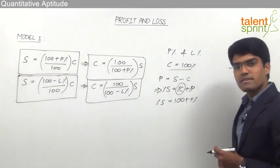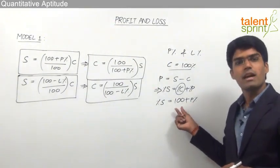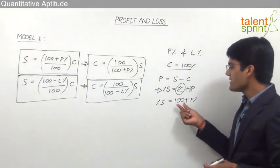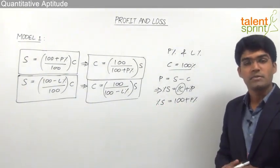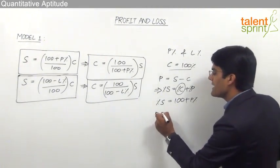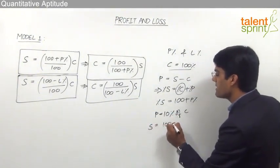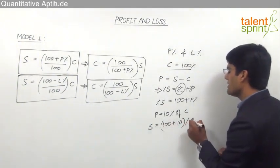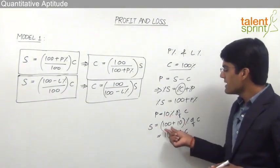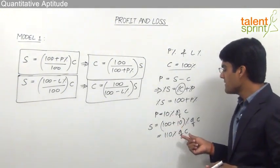For example, if the profit is 10%, selling price would be 100 + 10 = 110%. If the profit is 20%, selling price would be 100 + 20 = 120%. If the profit is 55%, selling price would be 100 + 55 = 155%. All these percentages are with respect to cost price as it is the base value. So if profit is 10%, selling price = 110% of cost price; if profit is 20%, selling price = 120% of cost price; and if profit is 95%, selling price = 195% of cost price.